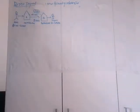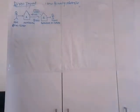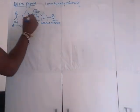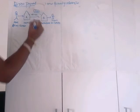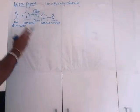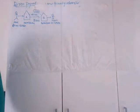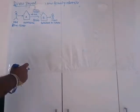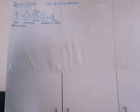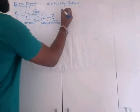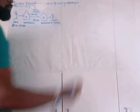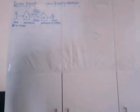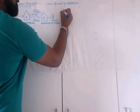Now we'll understand about the MT103 — what all tags and things will be present. As you all know, SWIFT has five blocks, and the message will start with Block 1.